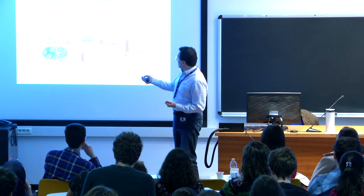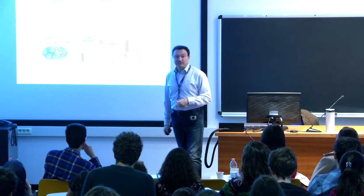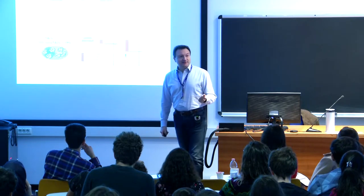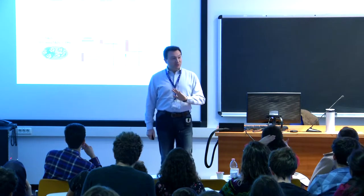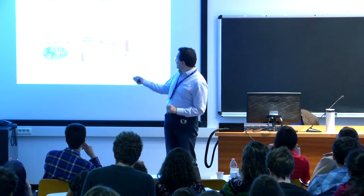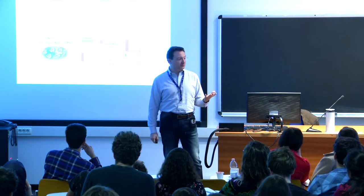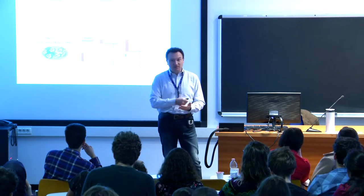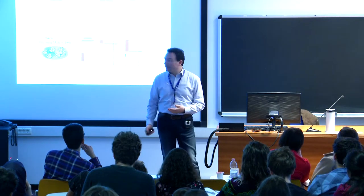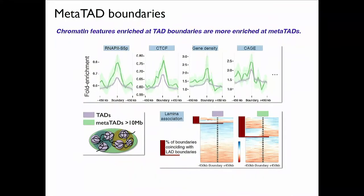What was observed is that CTCF, for instance, is enriched at TAD boundaries. What you do is align all the TAD boundaries in your genome, take all the boundaries and align the genome across the boundaries, then measure how much CTCF is at the left and right of the boundaries — and at the boundary itself — and measure the enrichment with respect to what you would expect. The violet curve in this plot is precisely that: zero is where the boundary is sitting, and the violet curve tells you how much CTCF is enriched with respect to noise. And indeed CTCF is enriched at TAD boundaries.